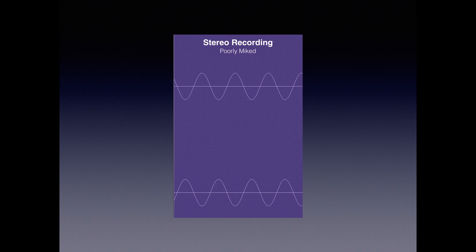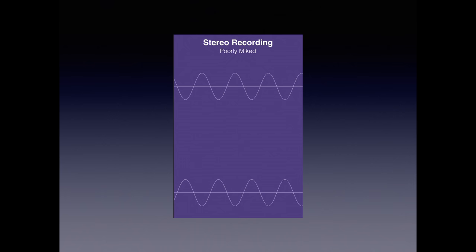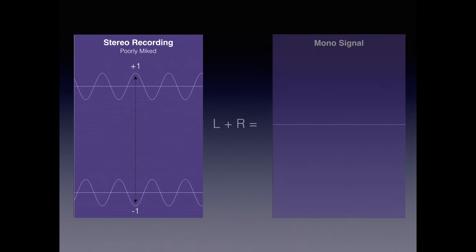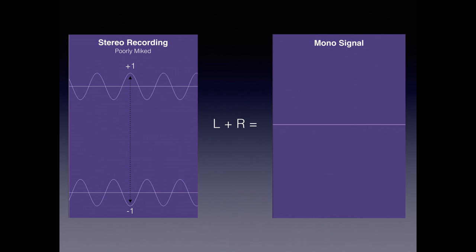What we're looking at here is a poorly mic'd stereo recording. You can see that we have our left and our right channel. And if we were to look at the amplitudes at any point in time and assign some values — for example, plus one to the left channel and minus one to the right channel — and we were to sum those together, you would get zero. This is what happens when you convert a stereo track into a mono track: you're folding the left and the right channels together into the center, and they are additive. So plus one minus one equals zero.